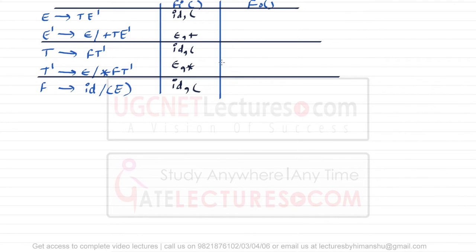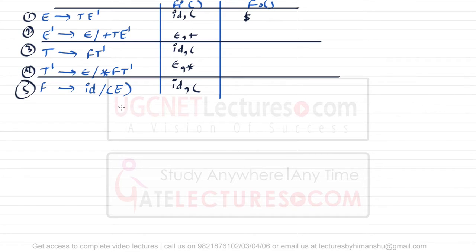Now we need to find the FOLLOW. FOLLOW of E: E is the start symbol, so FOLLOW of the start symbol always contains dollar. Additionally, in the process of derivation, in production number five, E is followed by a closing bracket, so FOLLOW of E also includes closing bracket.